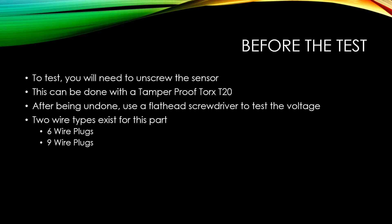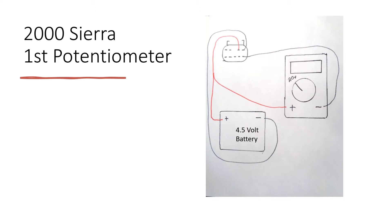There are two wire types that exist for this part. There's a six wire plug and a nine wire plug and both will be tested in this video. After unscrewing the sensor and setting up the power supply, you're going to also need a multimeter set to 20 volts just like this.